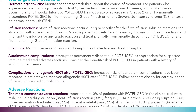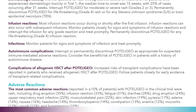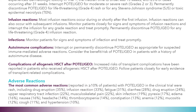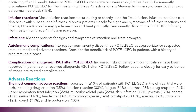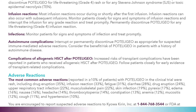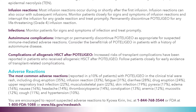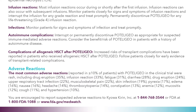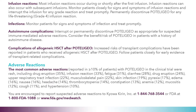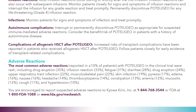Autoimmune complications: Interrupt or permanently discontinue Poteligio as appropriate for suspected immune-mediated adverse reactions. Consider the benefit-risk of Poteligio in patients with a history of autoimmune disease. Complications of allogeneic HSCT after Poteligio: Increased risk of transplant complications have been reported in patients who received allogeneic HSCT after Poteligio. Follow patients closely for early evidence of transplant-related complications.